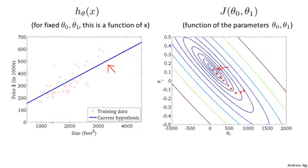We've just run gradient descent and gotten a good fit to our housing prices data set. You can now use it to predict: if your friend has a house of 1,250 square feet, you can read off the value and tell them they might get around $250,000 for their house.